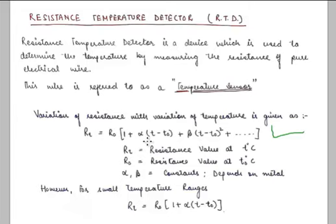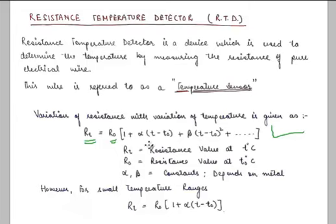The governing equation is: RT = R₀ × (1 + α(T − T₀) + β(T − T₀)² + ...) extending to higher orders of (T − T₀). Here, RT is the resistance at temperature T degrees Celsius, R₀ is the resistance at reference temperature T₀, and the constants α, β and subsequent terms are the temperature coefficients of resistance. The value of these constants depends on the type of metal used for the RTD.